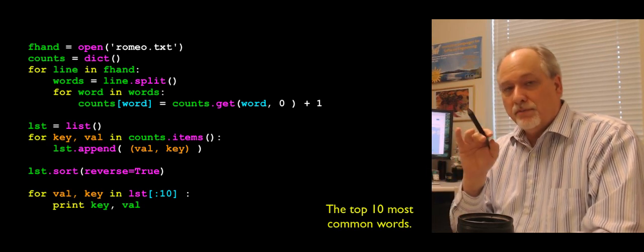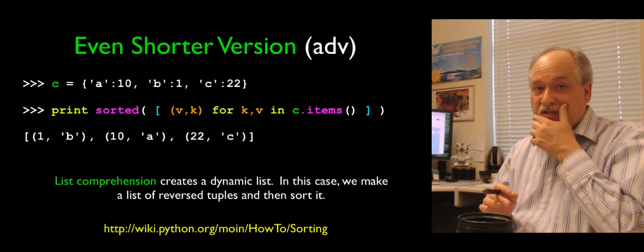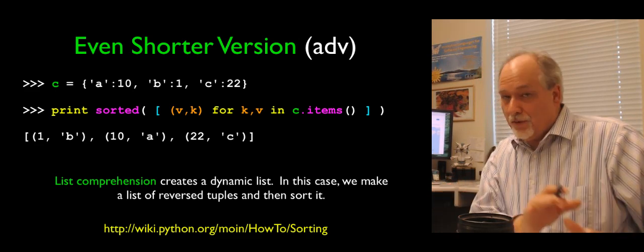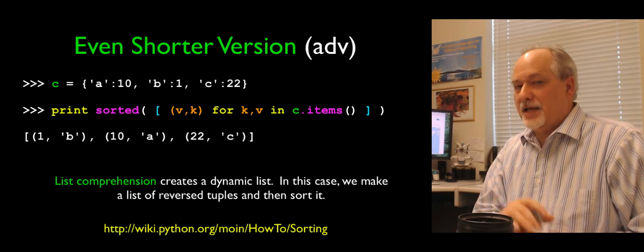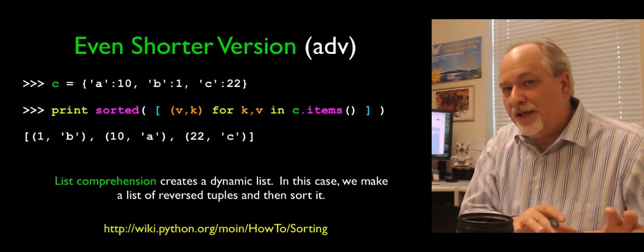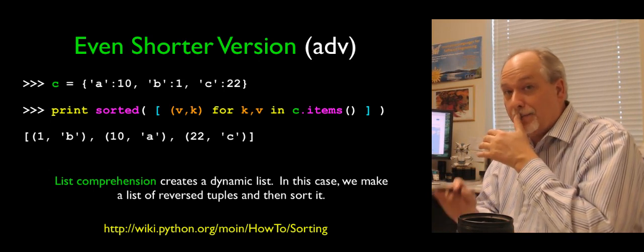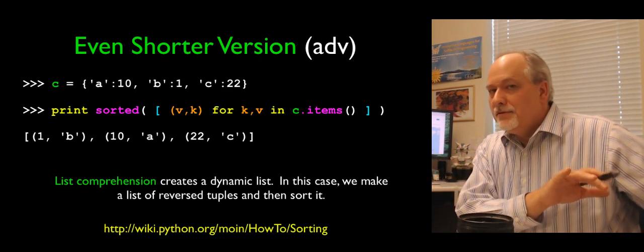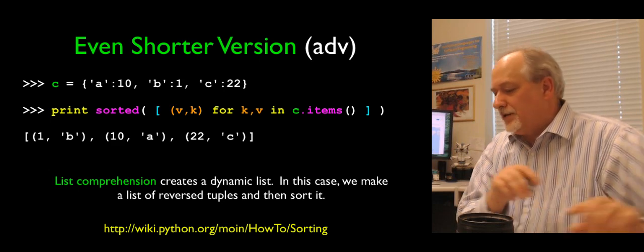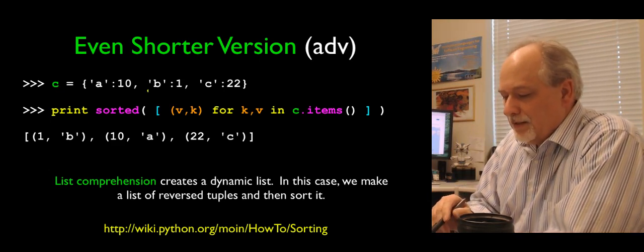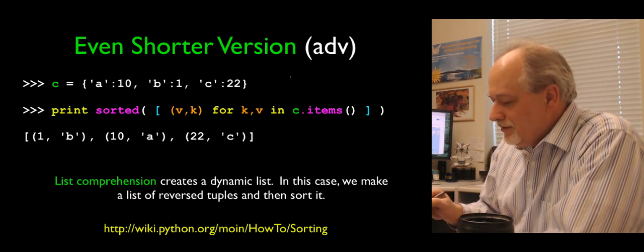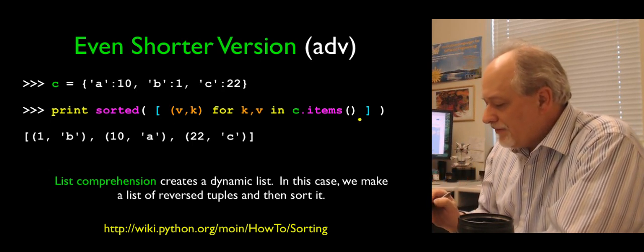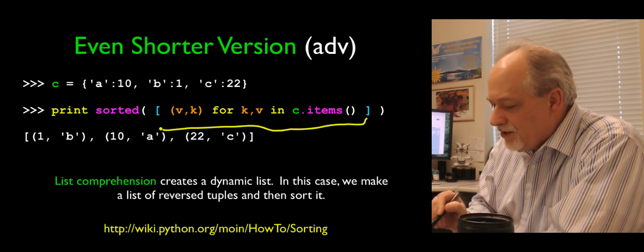So as you become more powerful and capable inside Python, you will realize that there are sometimes even shorter ways of doing things. Now what I'm showing you here is not that different than what was on the previous page. It's just really dense. But you have to concentrate. So I want you to understand what's on that previous page. If you don't understand this, don't feel bad. I'm going to explain it to you. But don't feel bad if you don't get it. So I'm just going to explain it. If it doesn't feel right to you, go back and look at the previous page. So here we go. I'm going to have a dictionary. And then I'm going to print in one line sorted by value. So we'll start from the inside out. So this is a thing called list comprehension.